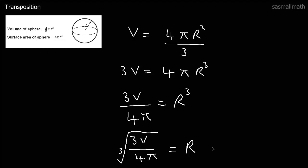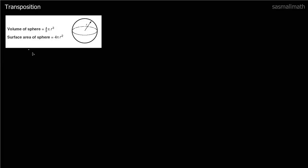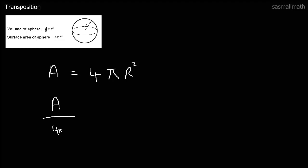Now we'll look at the surface area of the sphere. A equals 4 pi r squared. We can do this in one go — move the 4 pi first, then square root everything. So the square root of A divided by 4 pi equals r.